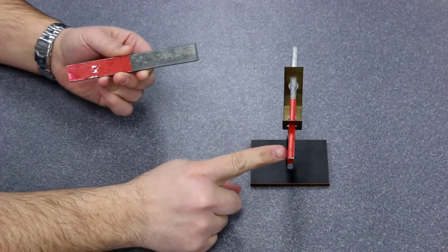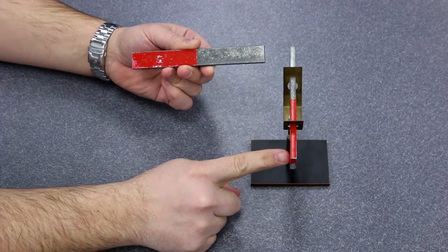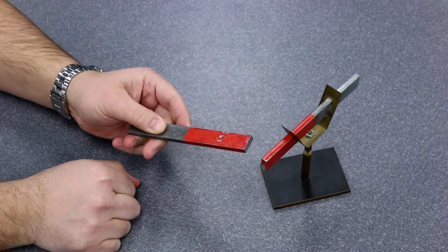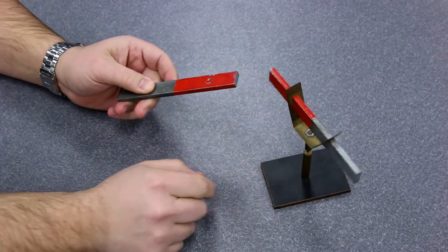Here's a better view of the interaction between two conventional dipole magnets. Notice that no matter how I hold the magnet, opposites attract each other and like poles repel each other. Each of these magnets has two poles.